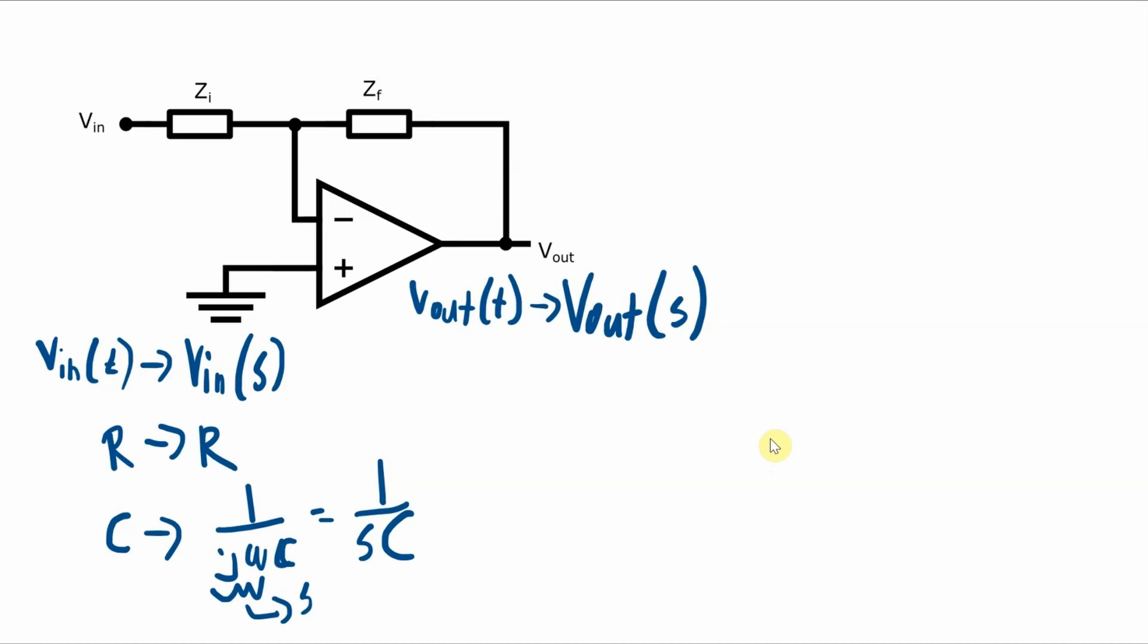So now the analysis becomes really similar to what we've done with the inverting amplifier configuration. Because no current flows into the inverting terminal, we have this current here, let's call it ii, and another current here, let's call it if. These are currents represented in the s domain.